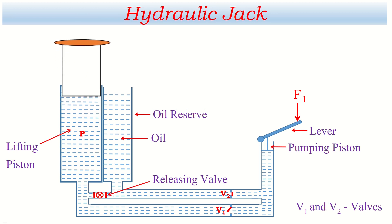When the lifting piston is pushed upward, it produces a very huge amount of force. Because of this force, the part of the vehicle near the wheel is lifted up, the wheel also lifts up, its nut can be opened, and the wheel can be taken out. When another wheel is placed and the nut is tightened, the work is done.